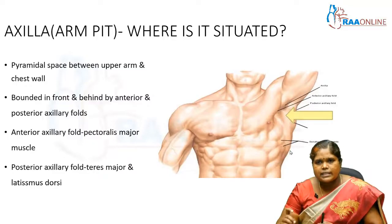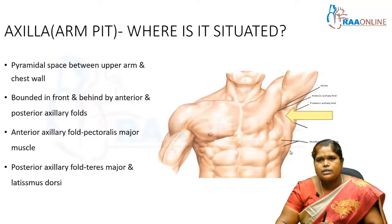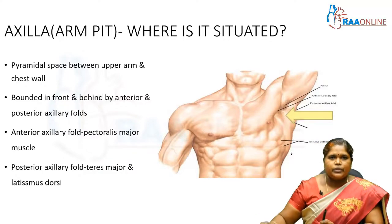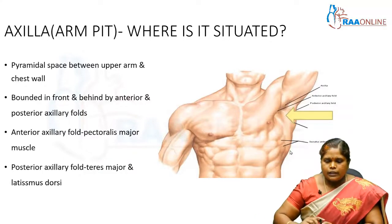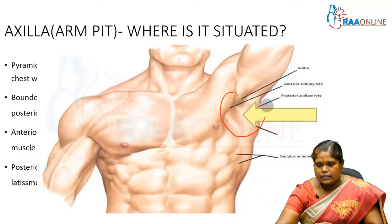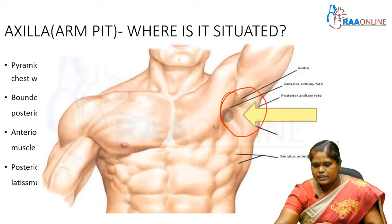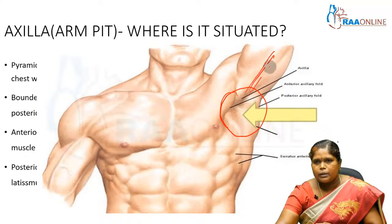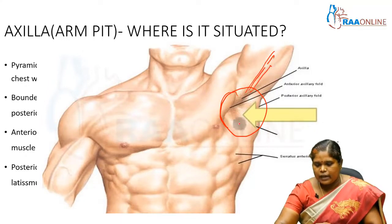Where is the axilla or armpit situated? Here we can see a space which is present between the upper part of the arm and the side of the chest wall.